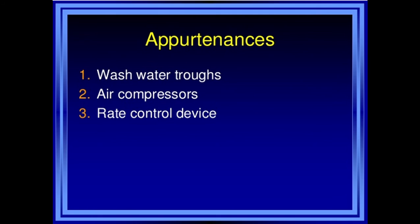Wash water troughs are provided at the top of the filter to collect the backwash water as it emerges from the sand and to conduct it to the drain. Air compressors are used to supply air for the agitation of the sand grains during the washing of the filters, which is called backwashing.